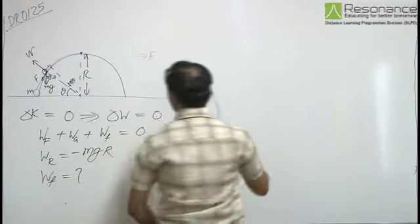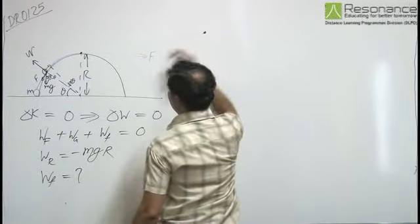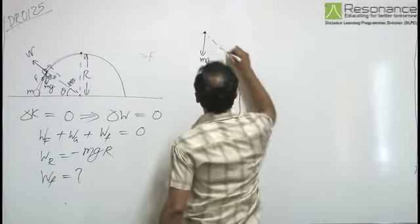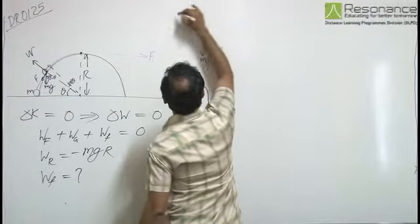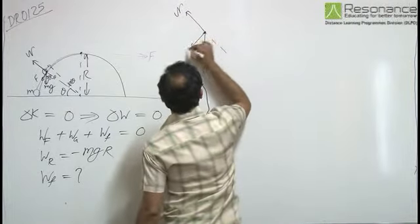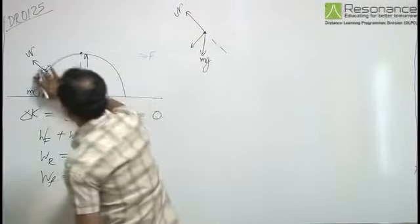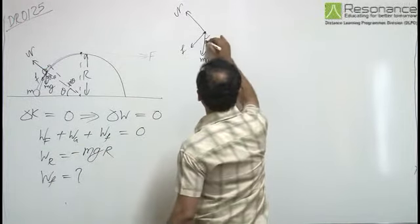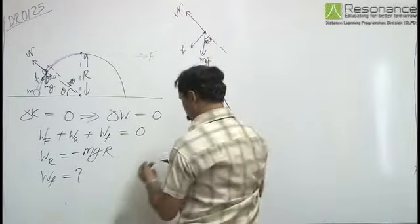So we have the component of forces on the block when Mg is downward, this is N and here we have the frictional force F acting on it, this angle is 90 minus theta.